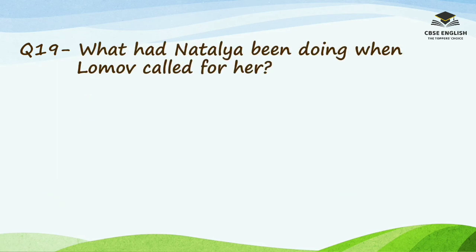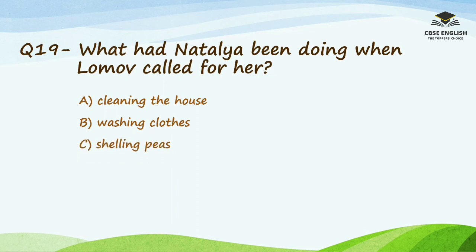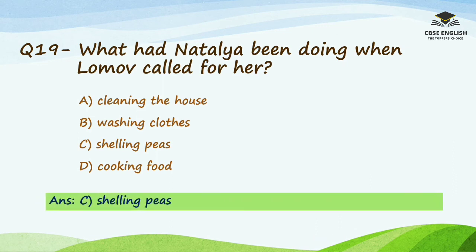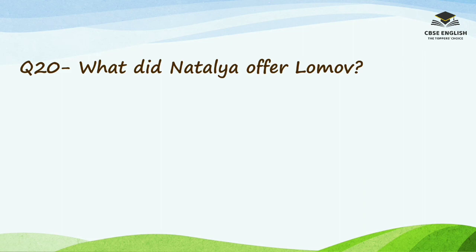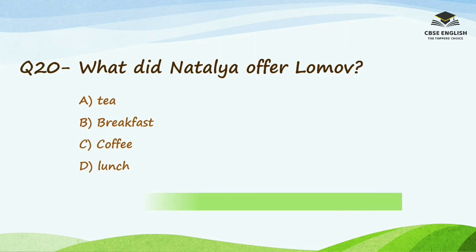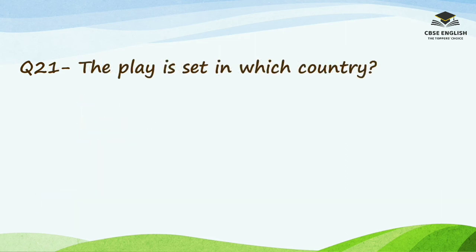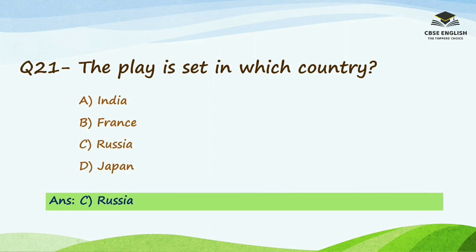Question number 19: What had Natalia been doing when Lomo called for her? Options are cleaning the house, washing clothes, shelling peas, or cooking food. The right answer is shelling peas. Question number 20: What did Natalia offer Lomo? Options are tea, breakfast, coffee, or lunch. The right answer is lunch. Question number 21: The play is set in which country? Options are India, France, Russia, or Japan. The right option is Russia.